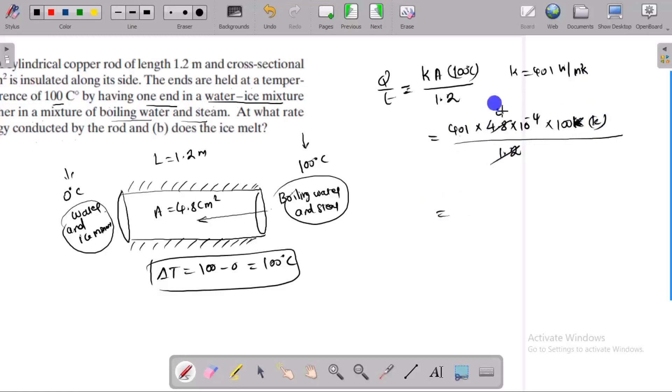The 4 and 4 cancel. 401, 400, 401, 400, 16. 401, 1600, 4 times 10 to the power minus 4, 1, 2, 3, 4. 16.04 joules per second. This is the conduction rate.